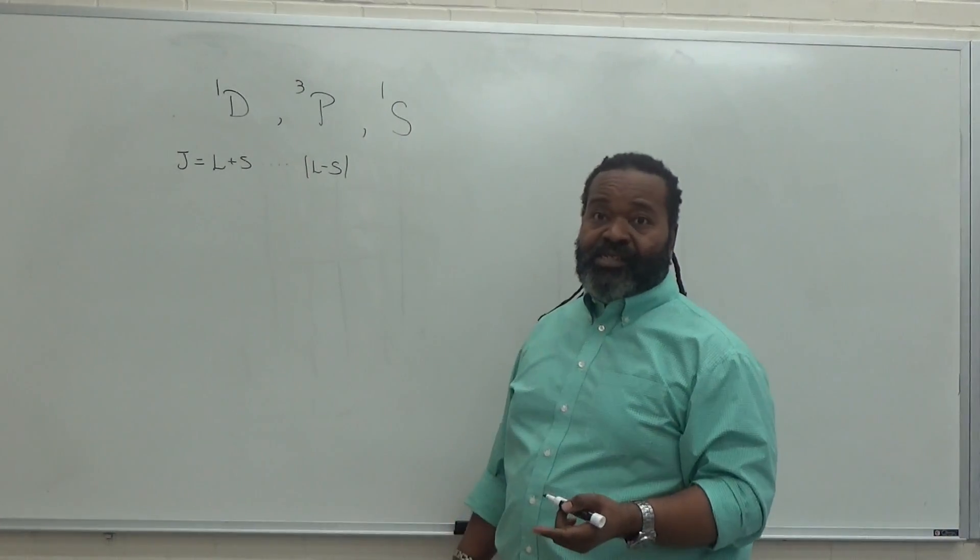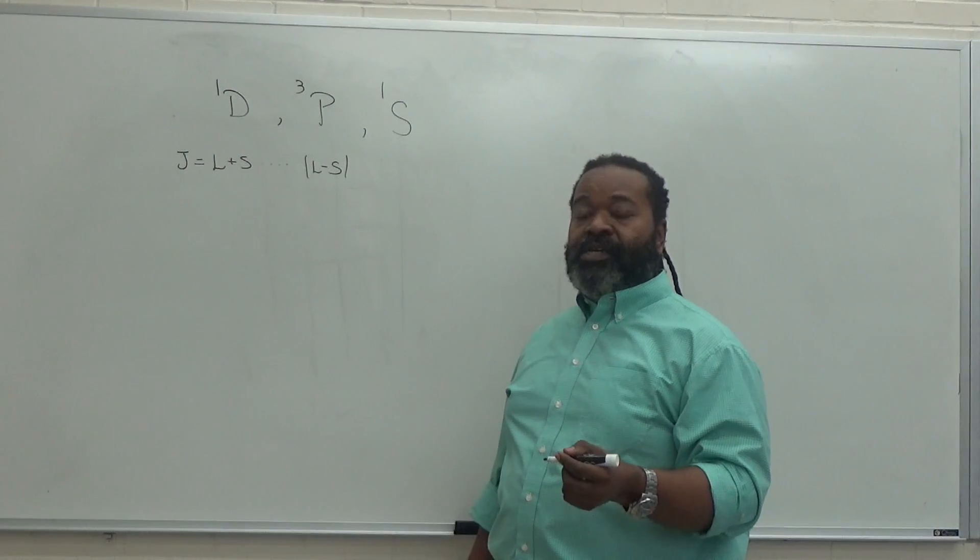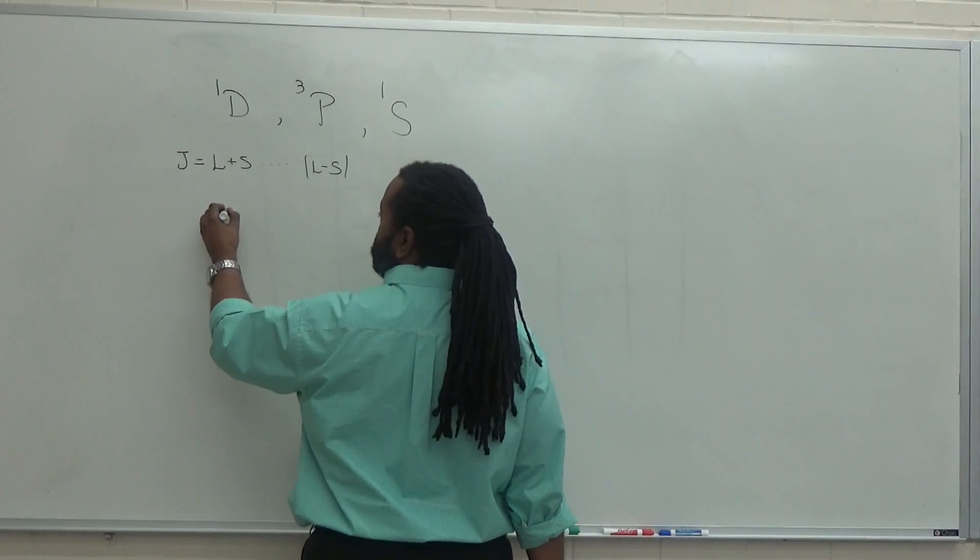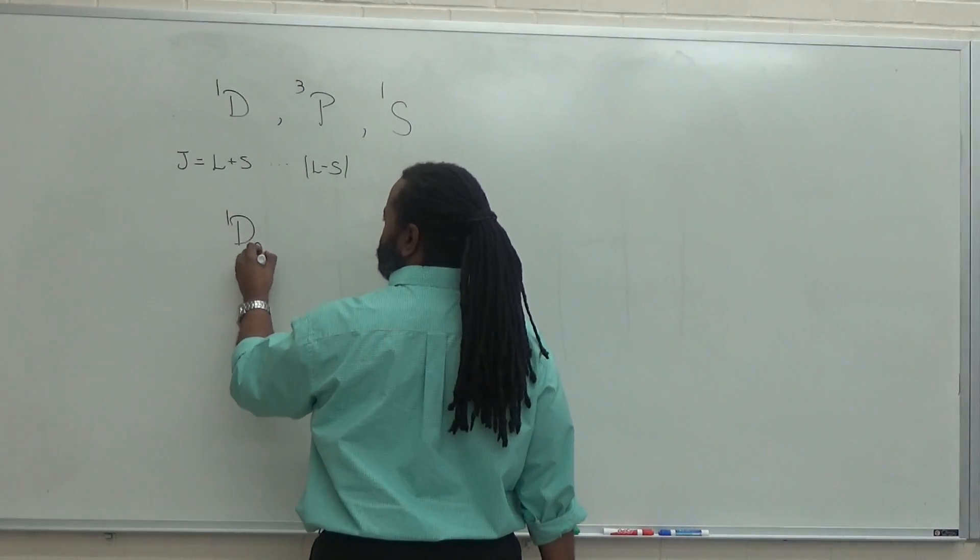So for the singlet D, that's an L equals two and an S equals zero. So there's only one possibility. So your singlet D becomes singlet D2.